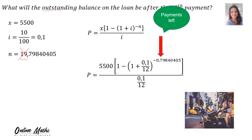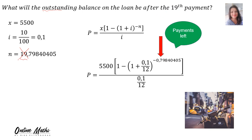Therefore, you substitute the 0.798 in. Your X is 5,500, your I is 0.1 divided by 12, over I 0.1 divided by 12. You slot that into your calculator and you find the outstanding balance on the loan after the 19th payment is 4,358 Rand and 57 cents.